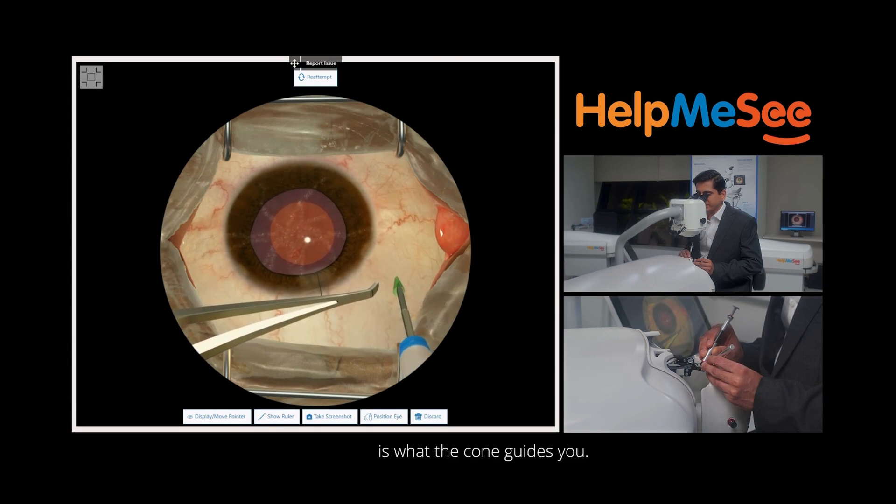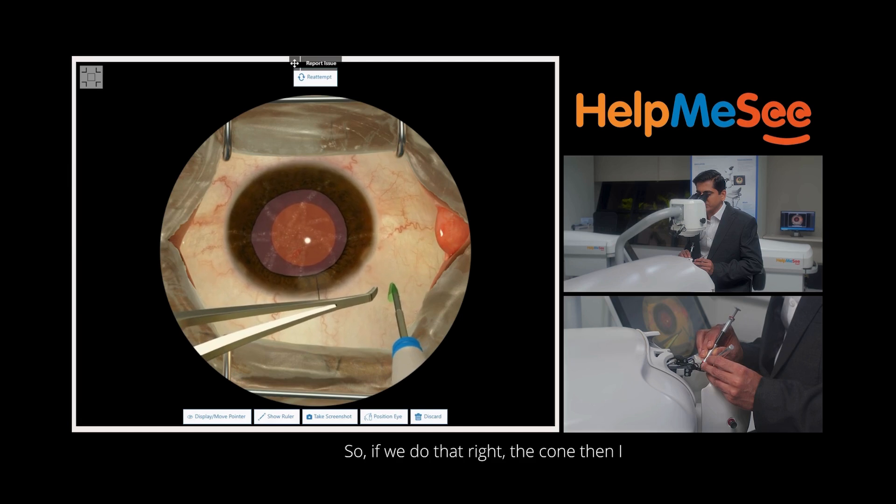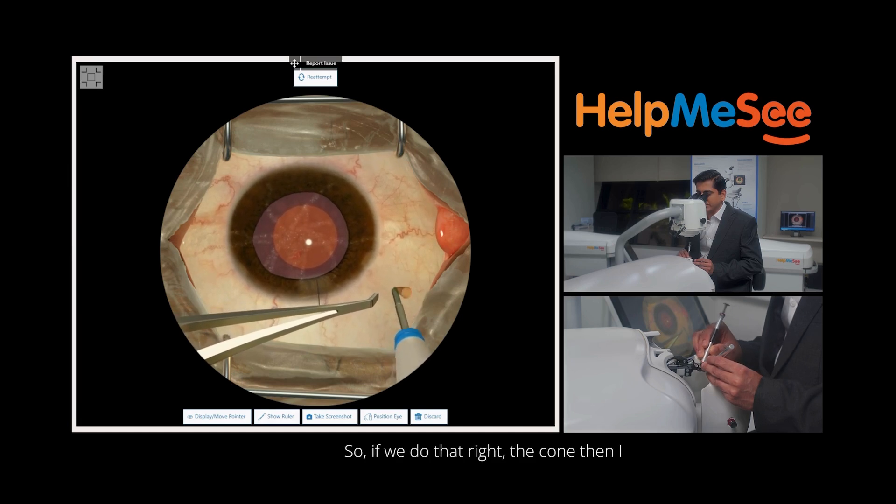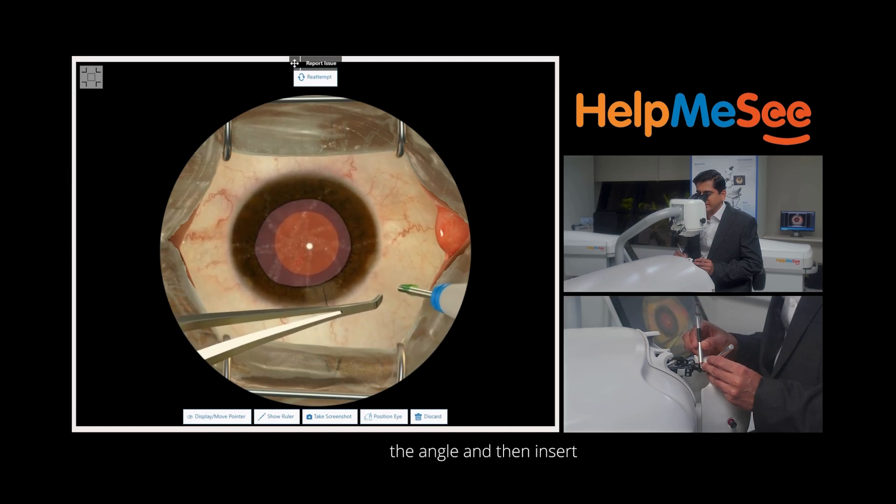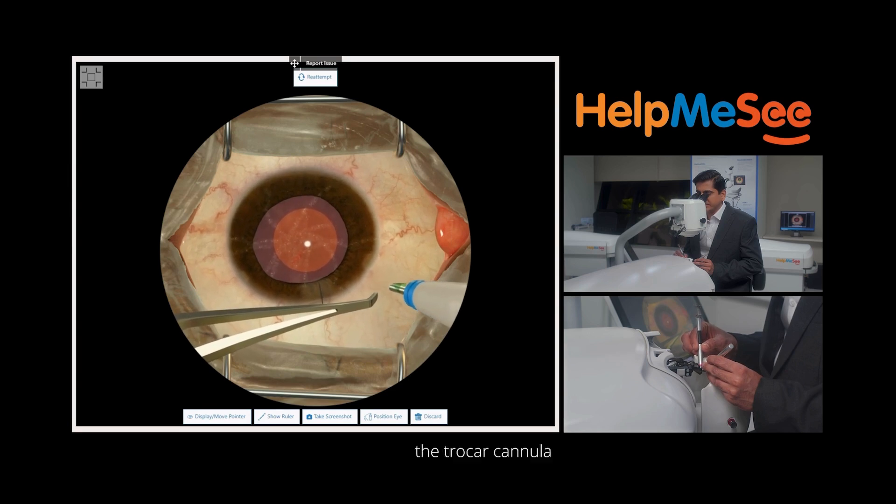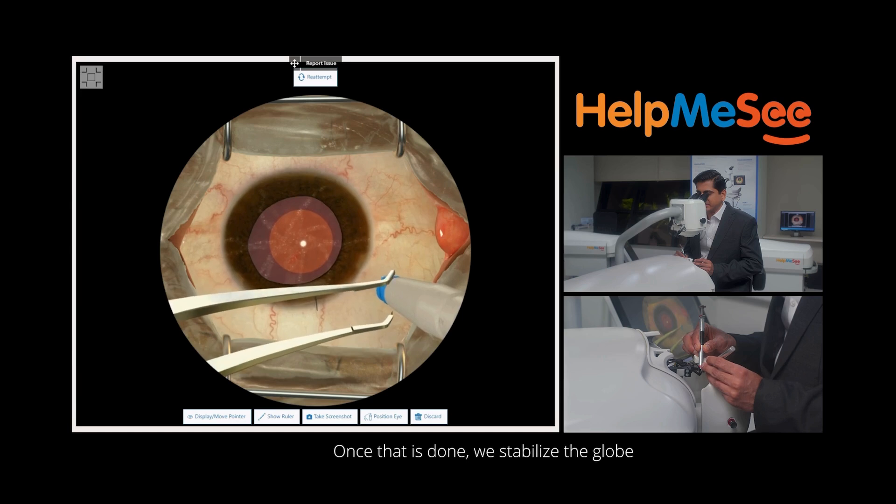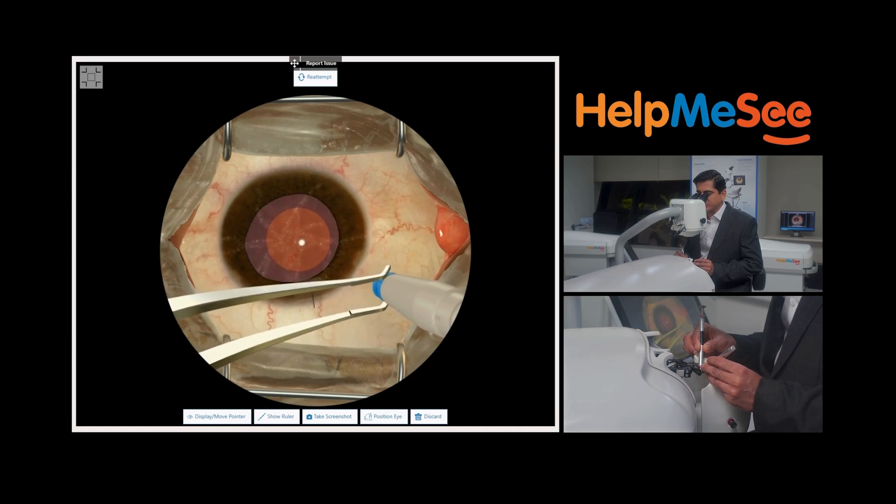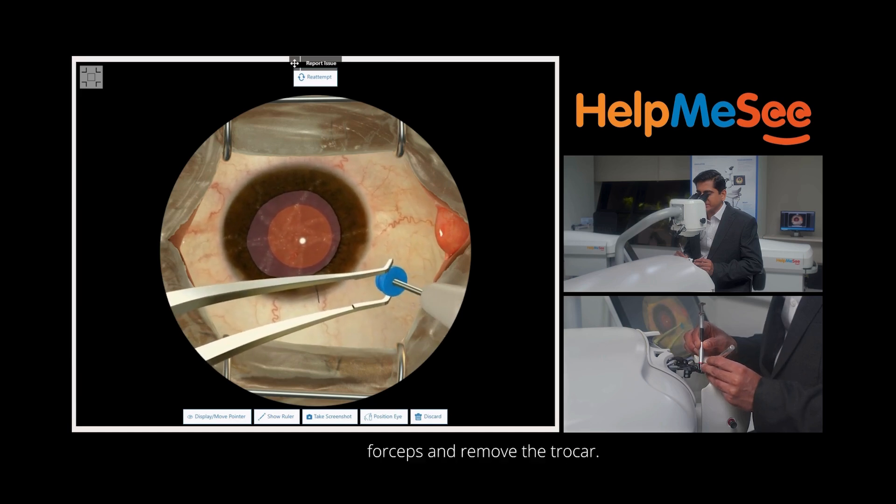The first angle of entry is what the cone guides you. If you do that right, the cone then asks us to change the angle and then insert the trocar cannula system inside the globe. Once that is done, we stabilize the globe with the colibri forceps and remove the trocar.